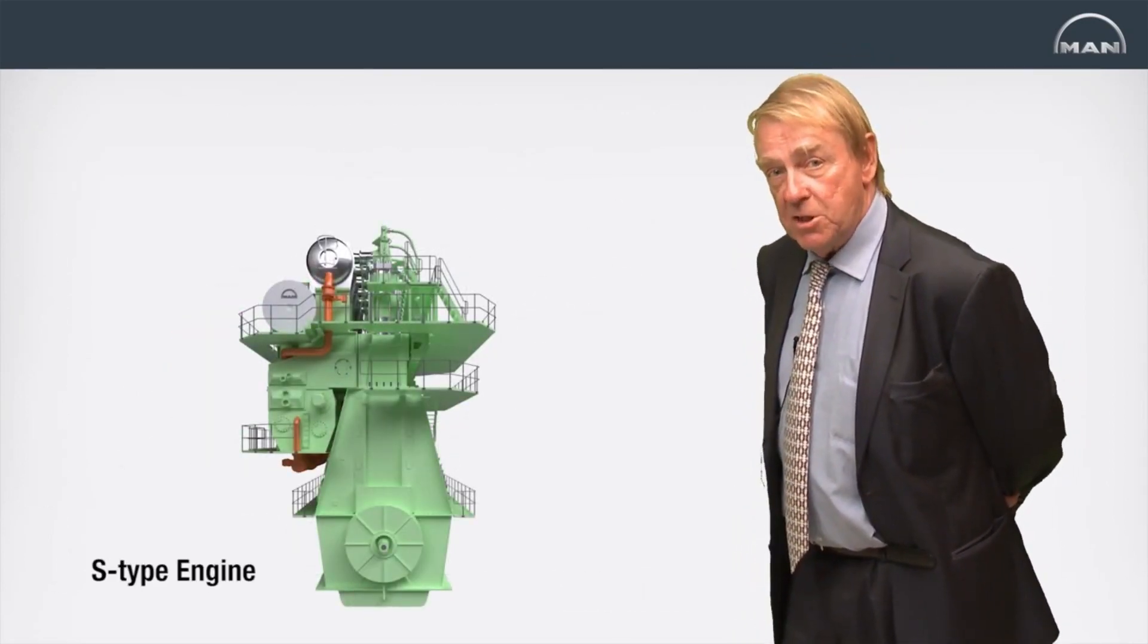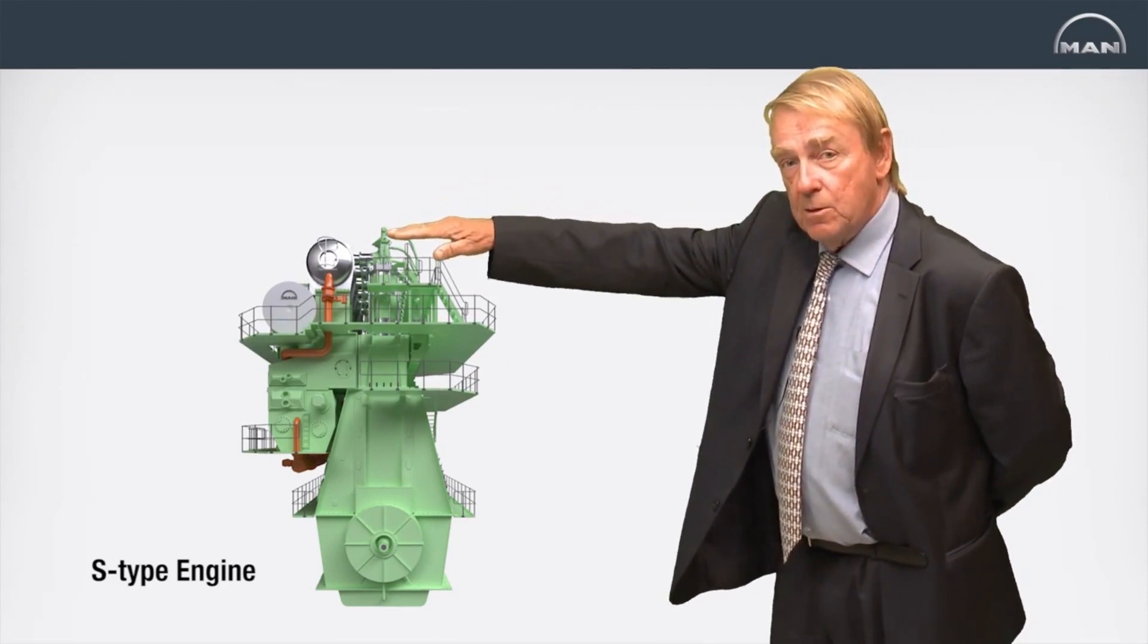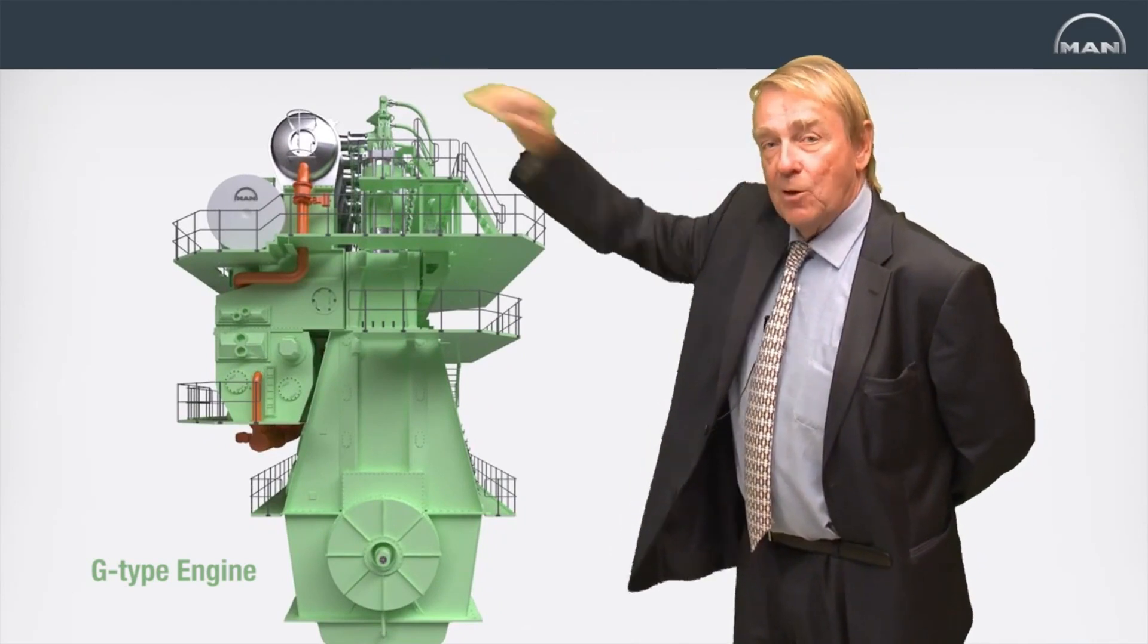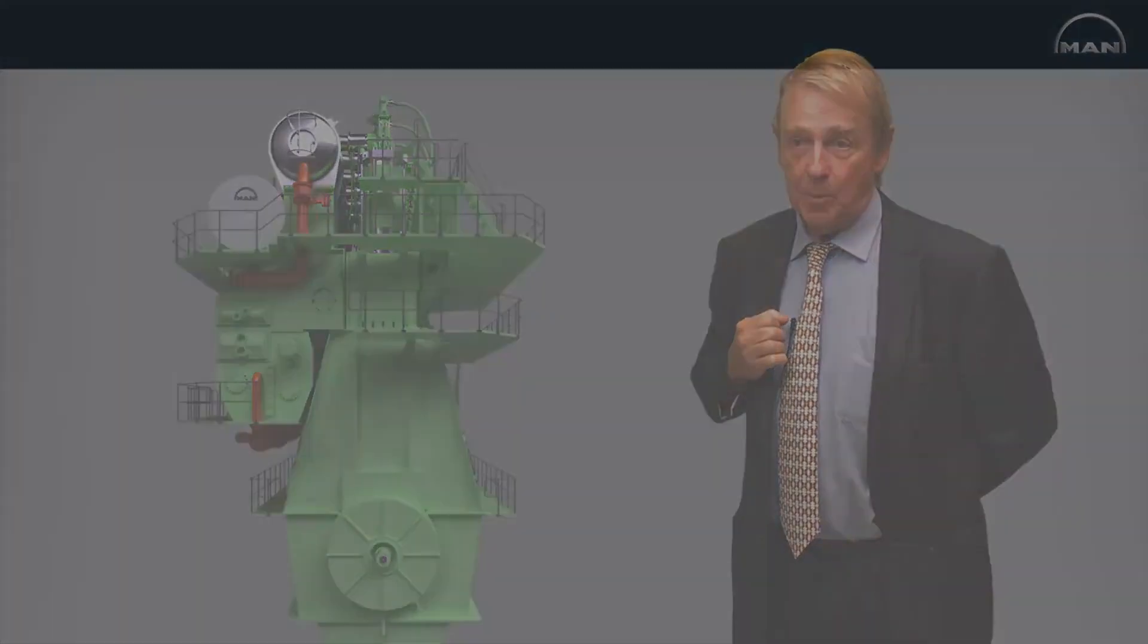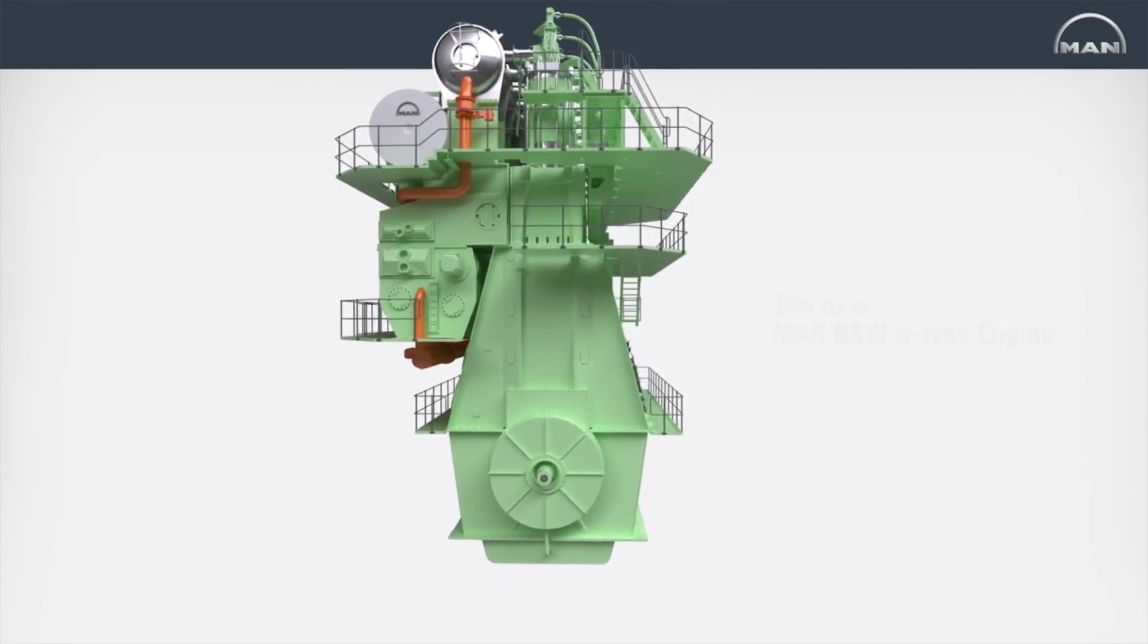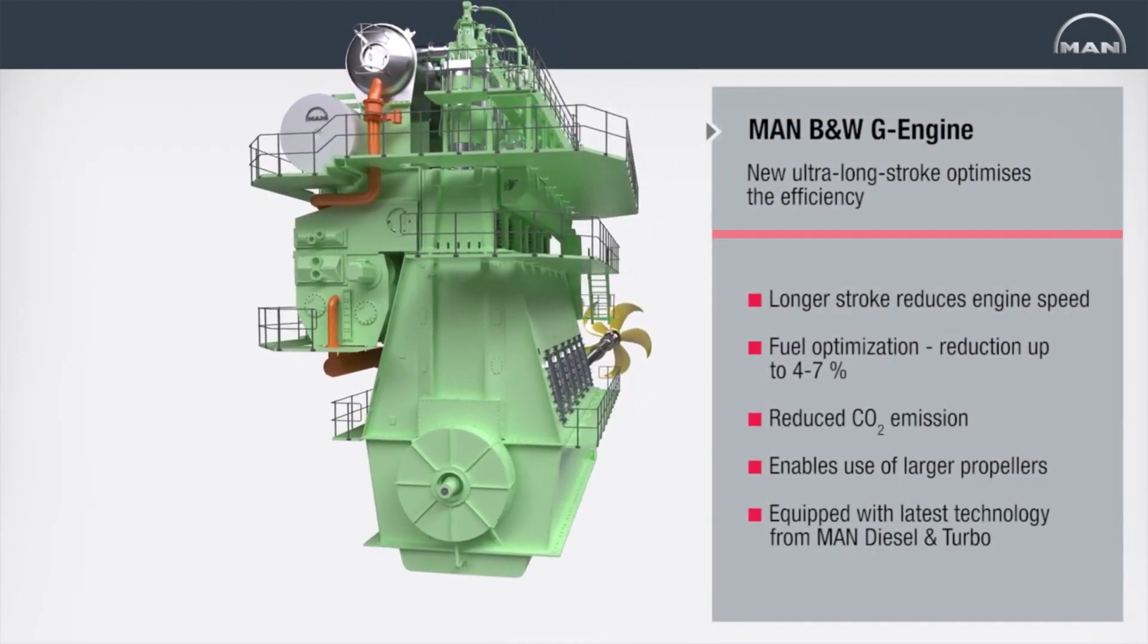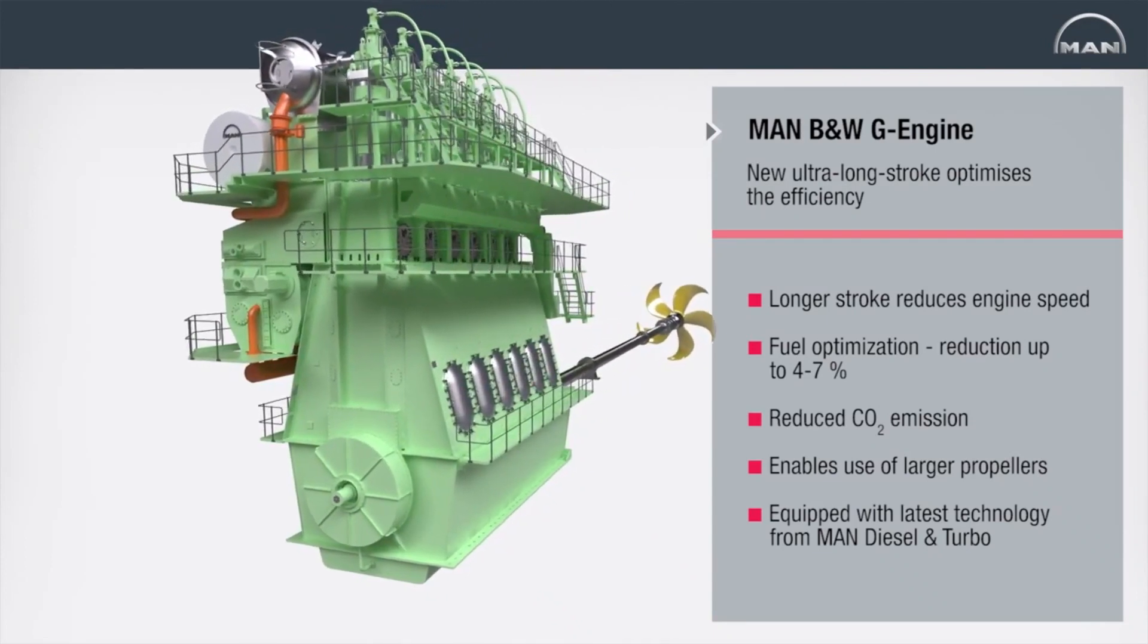Going from an S engine to a G engine means extending the stroke to bore ratio, thereby we get an engine with a longer stroke and lower RPM. This gives better efficiency of the propeller. The G-Type engine has a design that follows the principles of MAN Diesel & Turbo's large bore S-Type Mk9 engine, but whose ultra-long stroke enables the reduction of engine speed, thereby paving the way for ship designs of unprecedented high efficiency.